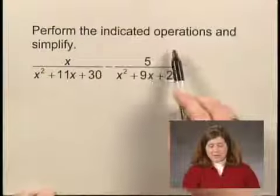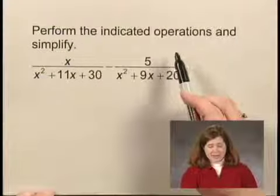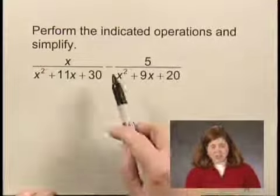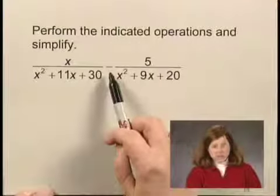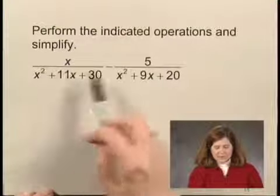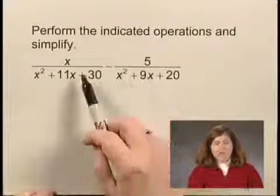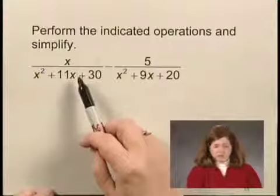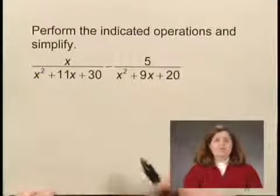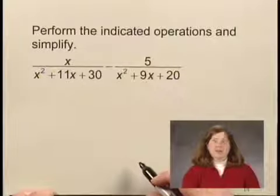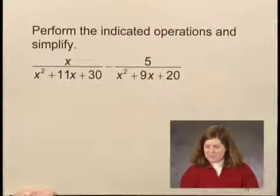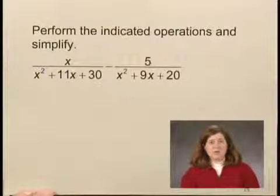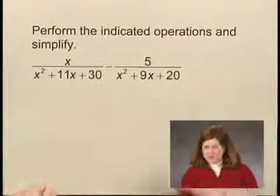In this exercise, we'll work with some rational expressions. The directions tell us to perform the indicated operations and simplify. In this case, the indicated operation is subtraction — we'll be subtracting this rational expression from this rational expression. In order to subtract, we need to have a common denominator. So let's begin by factoring the denominators in order to find a common denominator.